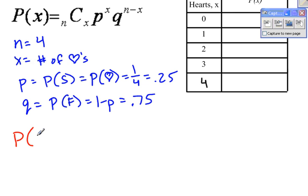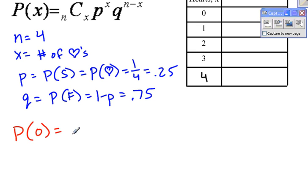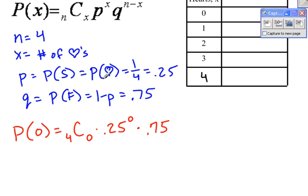What is the probability that I get zero hearts — that X equals zero? Using the formula: 4 choose 0, times p (0.25) raised to the x power (zero), times q (0.75) raised to n minus x. Since n is 4 and x is zero, that's 0.75 raised to the 4th power.